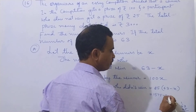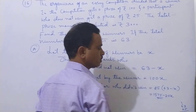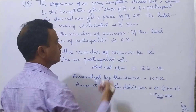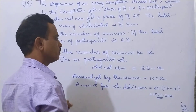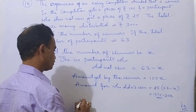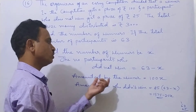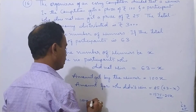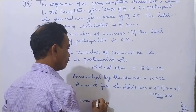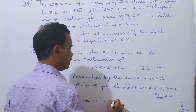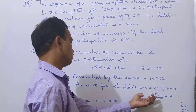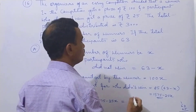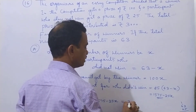So 25 into 63 equals 1575, minus 25x. The total amount for winners is 100x. So: 100x plus 1575 minus 25x. This amount equals the total amount, which is 3000.